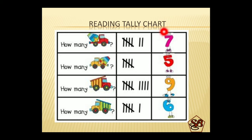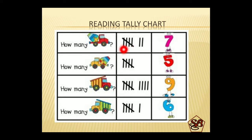Now, reading a tally chart. Here is a tally chart of different types of trucks — these are the tally marks and these are the numbers. Representing 5 like this makes our counting easier, as by just looking at it we come to know that this is 5. We have 5 plus 1 is 6, plus 1 is 7. So this tally is equal to 7.